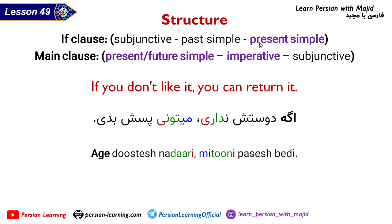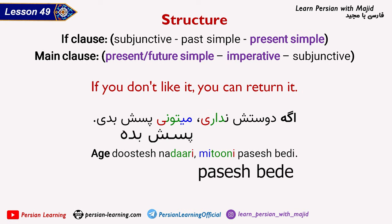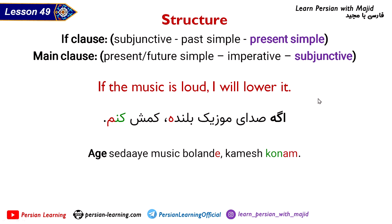Here we have a combination of present simple and present simple, or imperative structure. اگه دوسش نداری — 'if you don't like it' — میتونی پسش بدی — 'you can return it', present simple. We can also use imperative: اگه دوسش نداری پسش بده — 'just return it'.